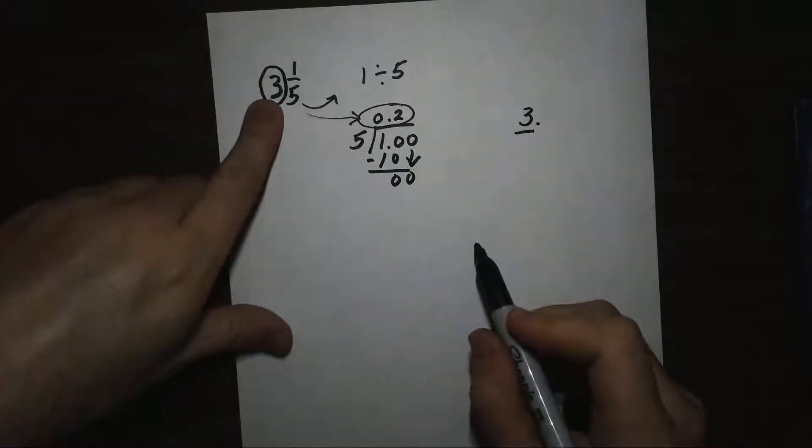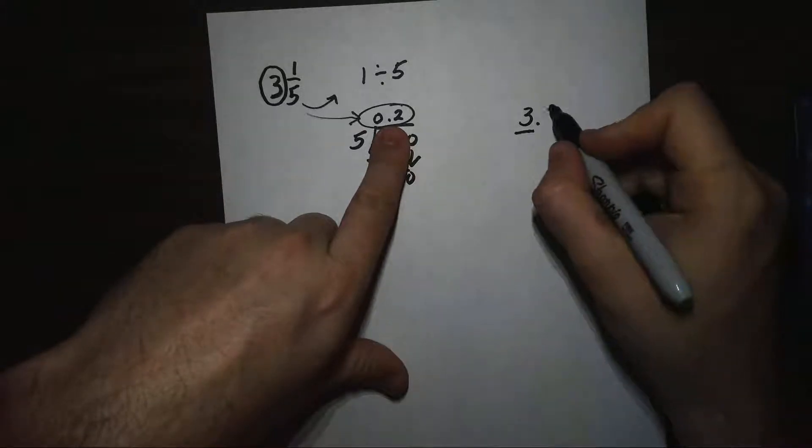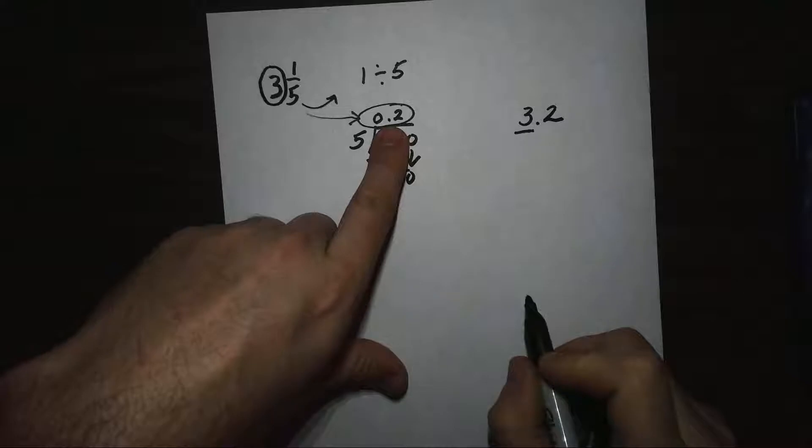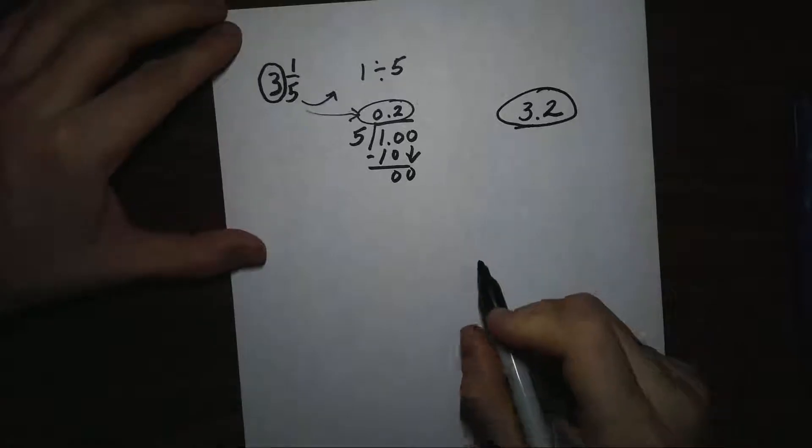So we had 3 wholes plus a decimal part or a fraction part of 0.2. So we can simply add that onto here. So 3 and 1/5 as a decimal is 3.2 or 3 and 2/10.